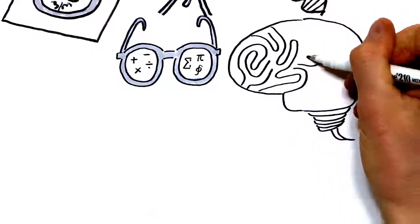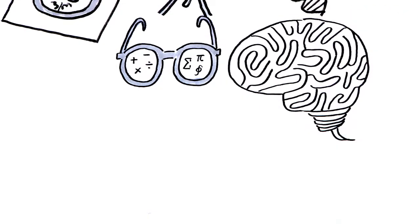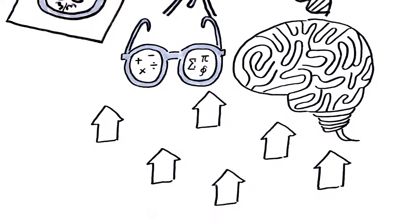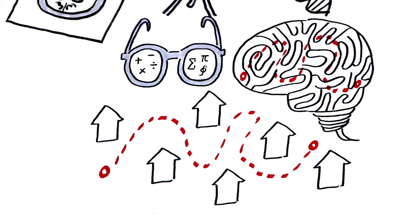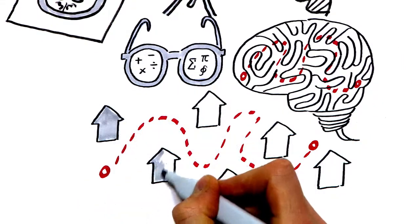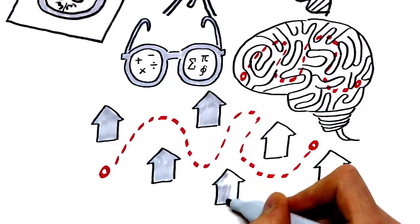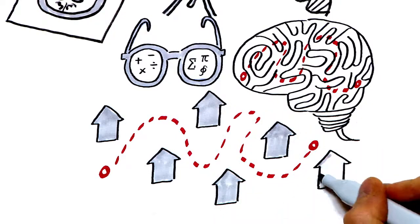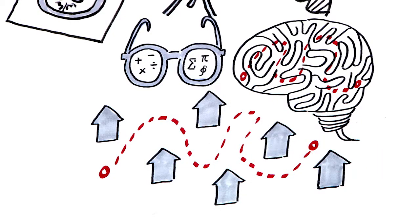For example, did you know that the abstract models of how electricity travels through the brain and how a disease spreads through a community are essentially the same? This is how breakthroughs happen. Mathematicians can cut through the detail and see the abstract problem and tackle it from a fresh perspective.